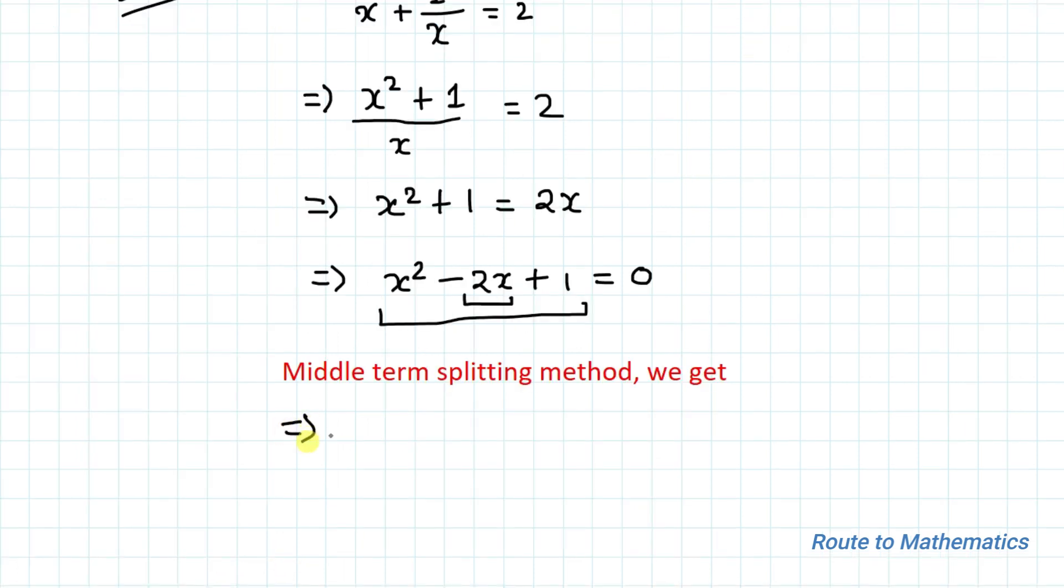Splitting this middle term, we get x square minus x minus x plus 1 equals 0. Because minus x minus x equals minus 2x, and the coefficients match.